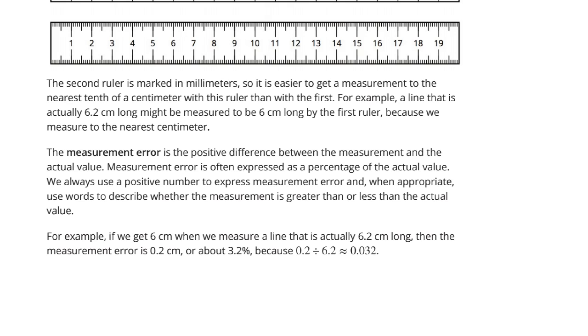And so, the measurement error is the positive difference between the measurement and the actual value. Measurement error is often expressed as a percentage of the actual value. We always use a positive number to express measurement error, and when appropriate, use words to describe whether the measurement is greater than or less than the actual value. For example, if we get 6 centimeters when we measure a line that's actually 6.2 centimeters long, then the measurement error is 0.2 of a centimeter, or about 3.2 percent. Because the 0.2 error divided by the 6.2 that it actually is, is about 0.032, or 3.2 percent.